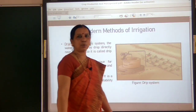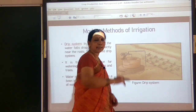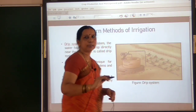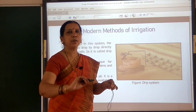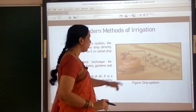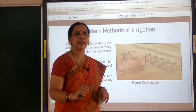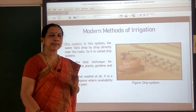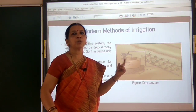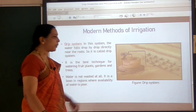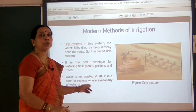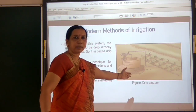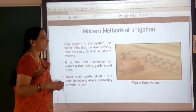Another modern method of irrigation is the drip system. As the name tells, water falls drop by drop directly to the roots — water is allowed to the roots only. This is called drip irrigation, a very efficient method with no wastage of water. Wherever water is very scarce, this system can be used. Most farmers today are using sprinkler and drip irrigation systems for fruit plants, trees, and other crop plants.